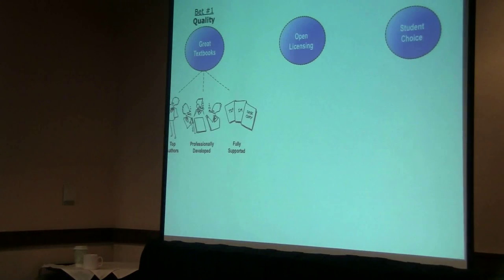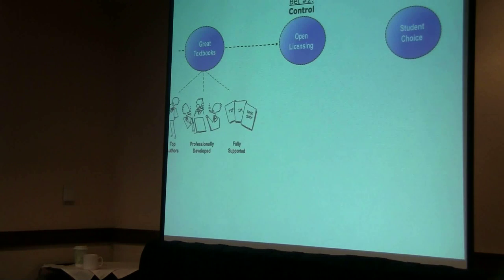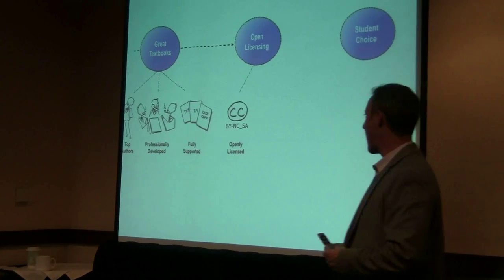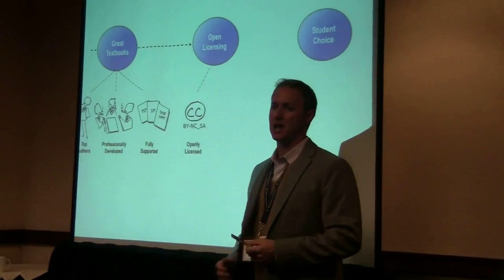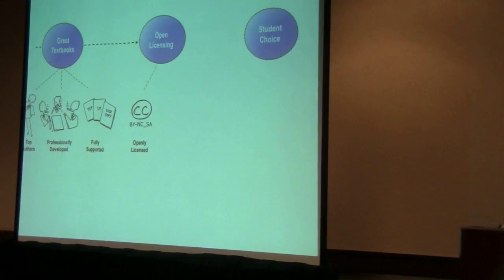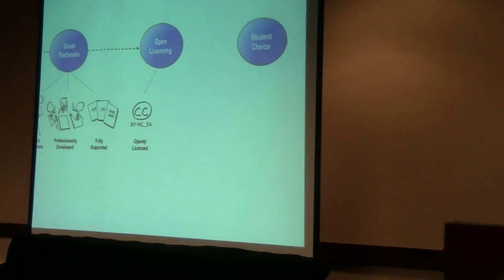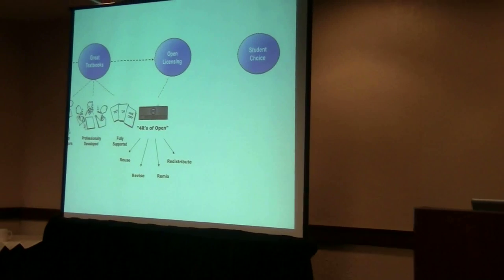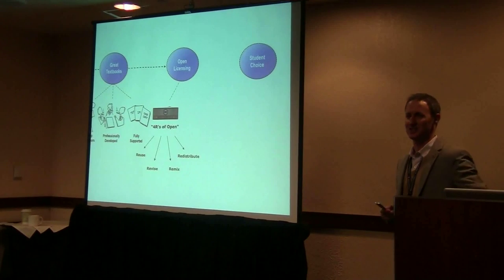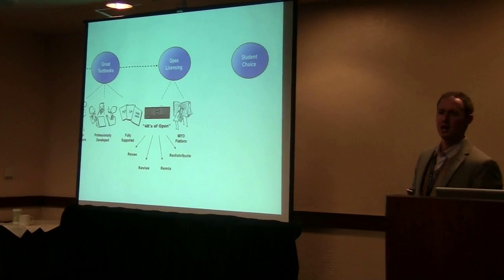Where we start to differentiate ourselves is in this transfer of control, which we do two ways. The first is via an open license — we use a CC BY-NC-SA license. That's the open license we've chosen for our textbooks. I'm not going to explain what that means because I think everyone in this room understands it.